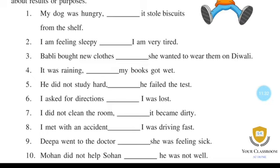Number 3: Bubli bought new clothes because she wanted to wear them on Diwali. Answer: because. Number 4: It was raining, so my books got wet. Answer: so. Number 5: He did not study hard, so he failed the test. Answer: so.